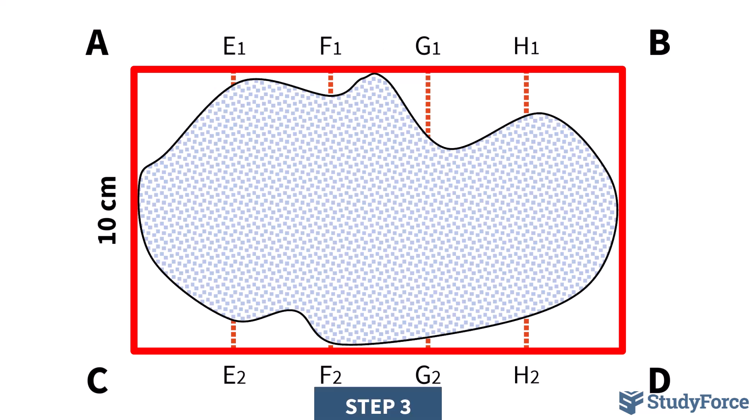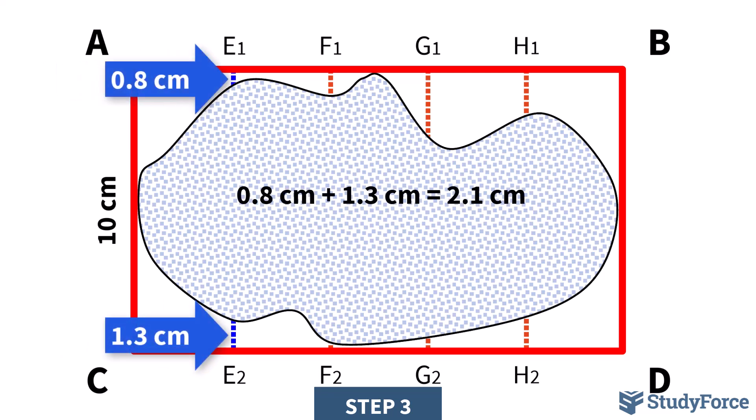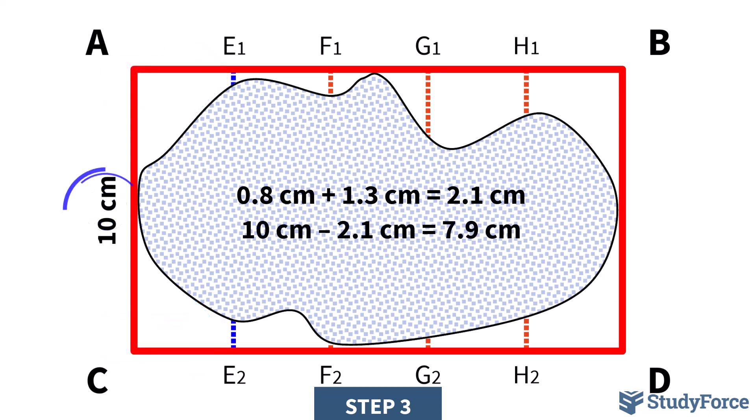We measure the distance from the edge of the rectangle to the outer boundary of the shape along each offset marking. For example, for offset E, measure this part and this part and take their sum. Then, subtract the sum from the width of the enclosed rectangle to get the actual width of the irregular shape at each interval.